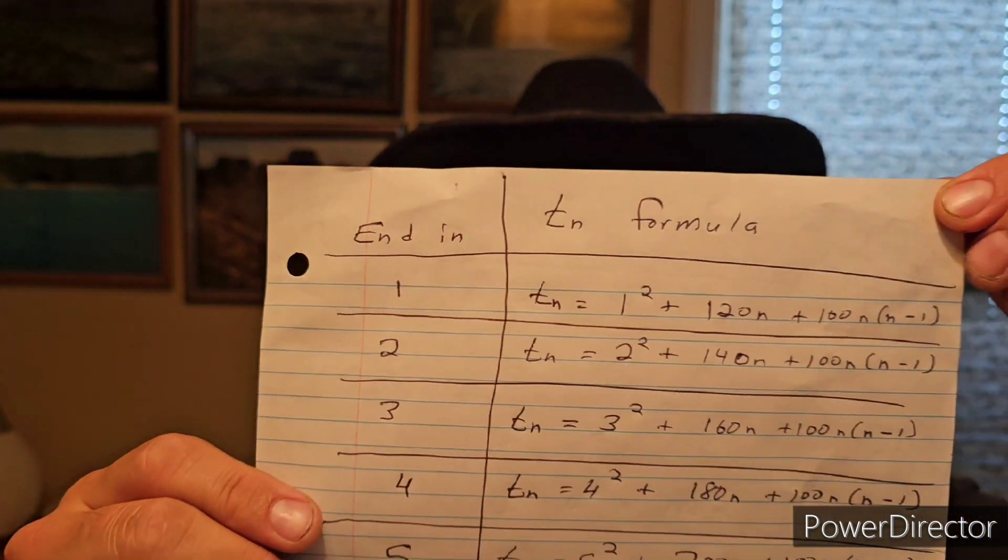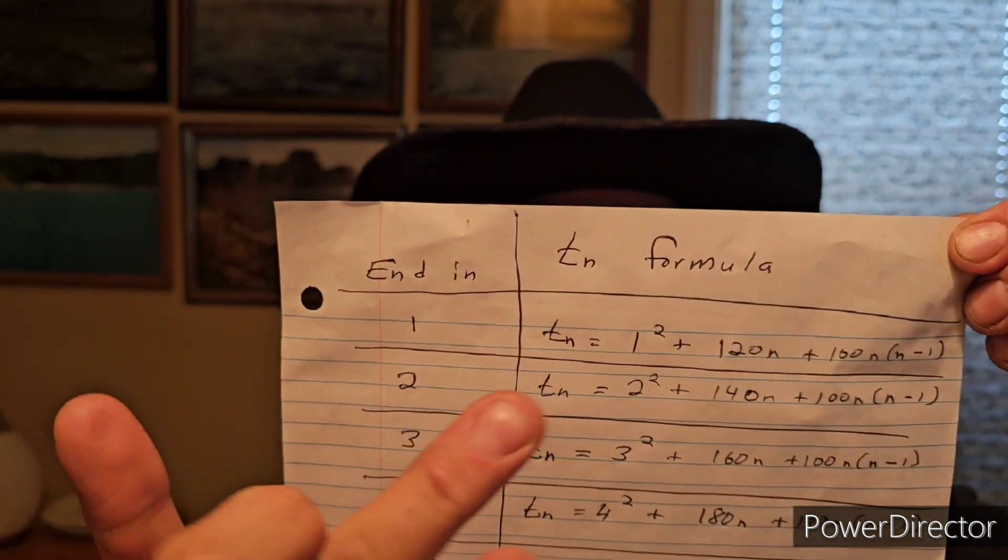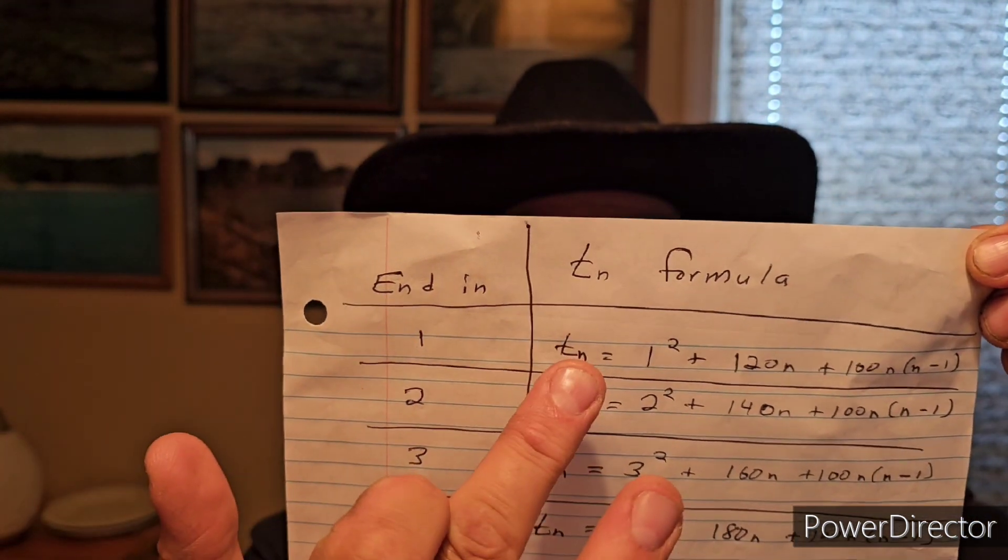Are you ready for some examples? Here goes. Let's do a number ending in 1. Let's do 71. So that would mean it would be ending in 1, so n would be 7.